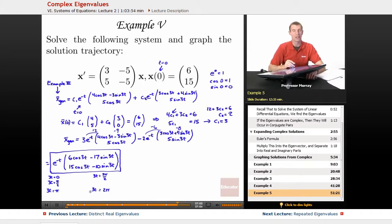Let me see what happens with each one. When 3t is 0, the sines drop out and I get the cosines, so I see I'll get [6; 15].